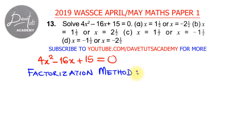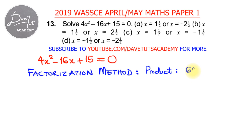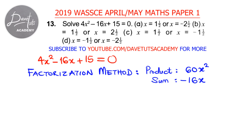The factorization method makes use of the product of the roots and the sum of the roots. The product of the roots comes from the first and last terms: 4x squared and 15, so that's 4 times 15 which is 60. The sum will amount to the middle term, which is minus 16x.